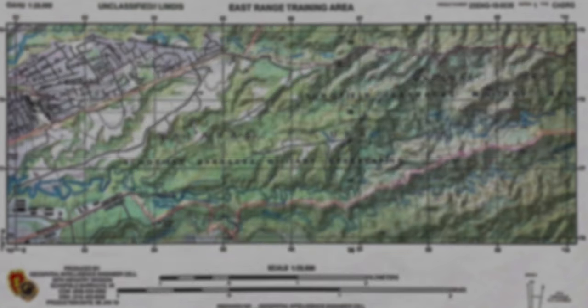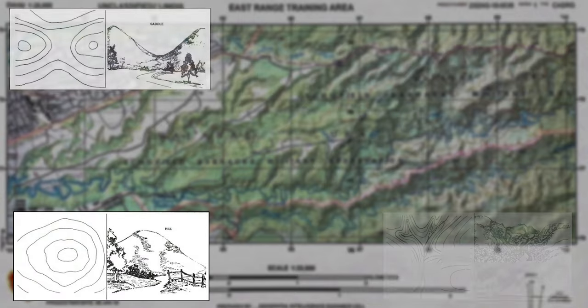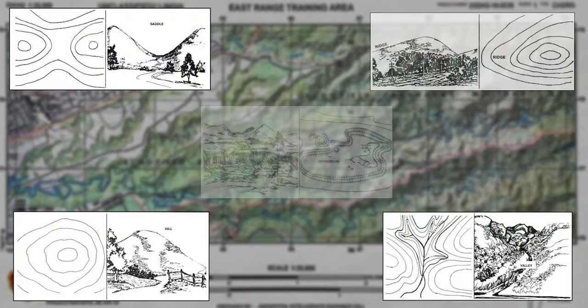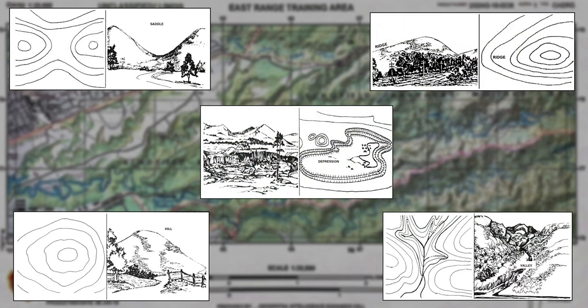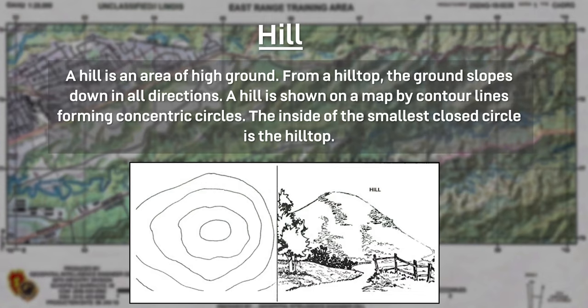From a ridge line a total of 10 natural or man-made terrain features are classified. Among those 10, there are five major terrain features: hills, saddles, valleys, ridges, and depressions. They are uniquely represented on maps. A hill is an area of high ground. From a hilltop the ground slopes down in all directions. A hill is shown on a map by contour lines forming concentric circles, and the inside of the smallest closed circle is the hilltop.